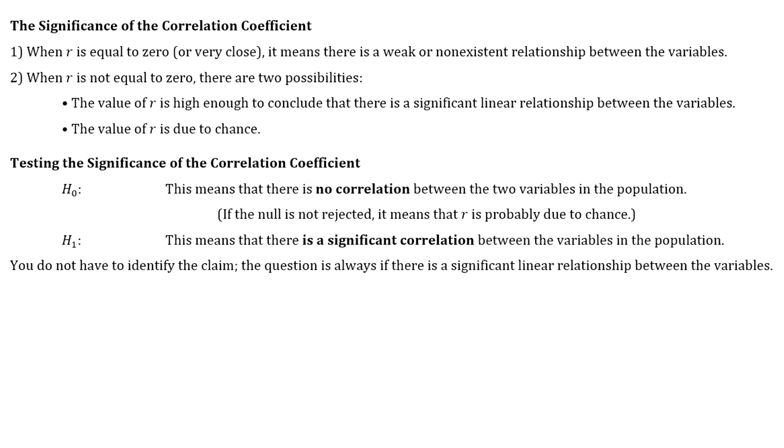Once you have your correlation coefficient, you want to look at what that number is actually telling you. So if r is equal to 0 or very close to it, then that means there is a weak or non-existent relationship between the variables.